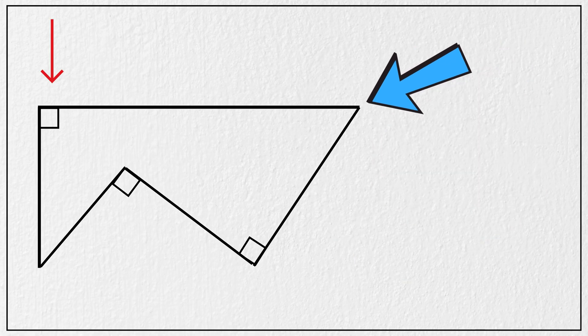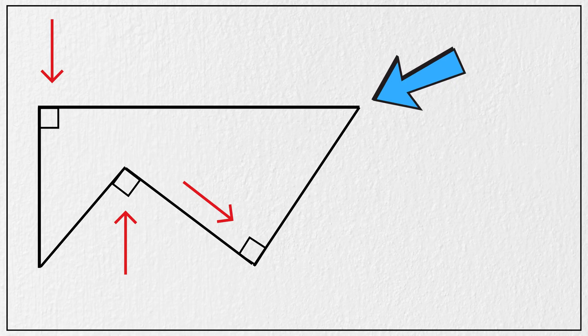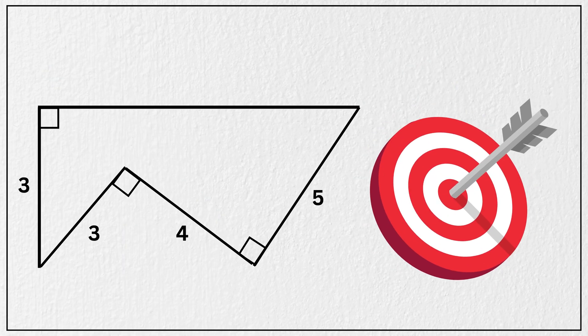We are given this shape with three right angles and with side lengths as 3, 3, 4, 5. Our goal is to find the length of this side, labeled as X.